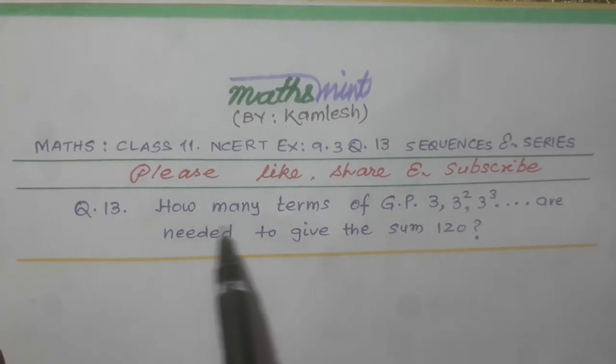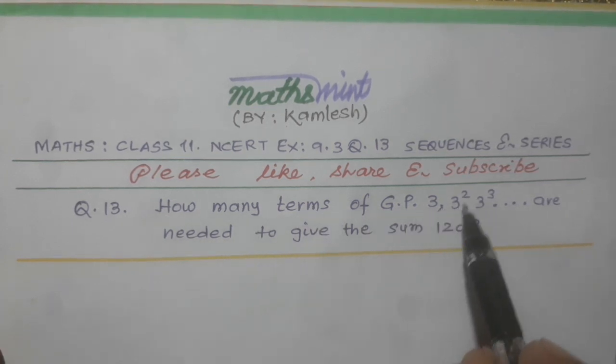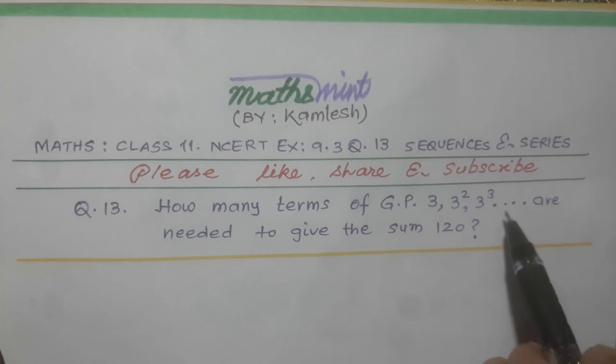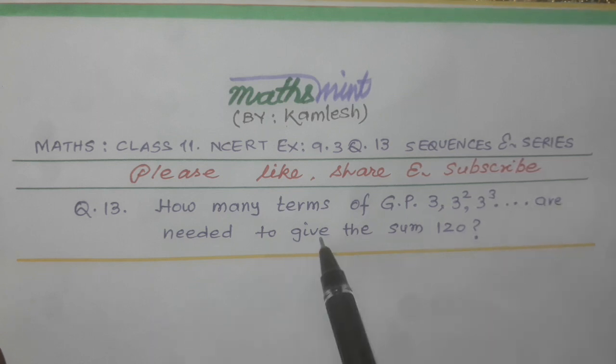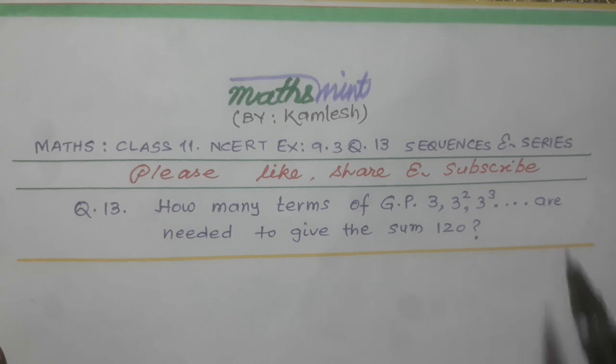It is a question of Maths class 11 NCERT exercise 9.3 question 13, chapter sequences and series. The question asks: how many terms of GP 3, 3 square, 3 cube and so on are needed to give the sum 120? So here we have to find the nth term.